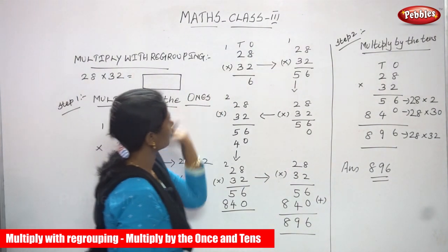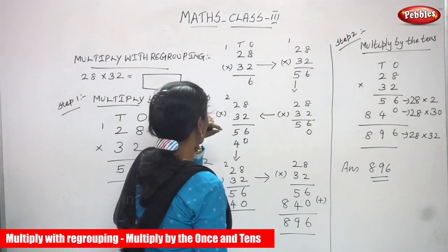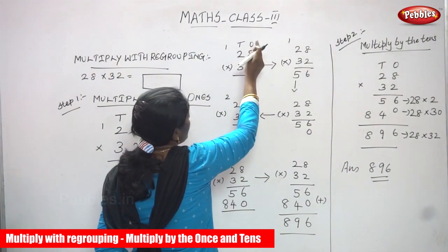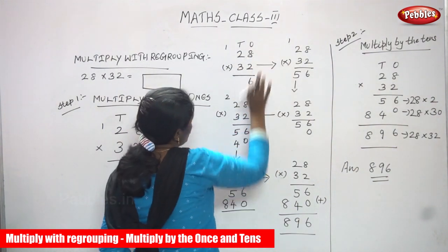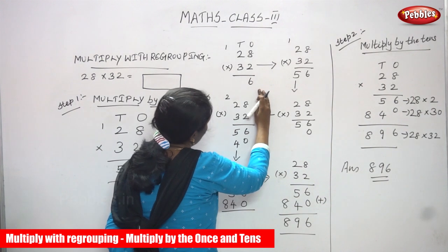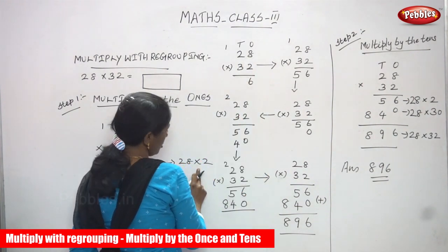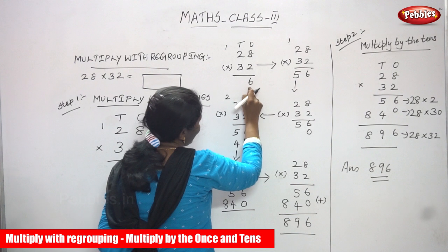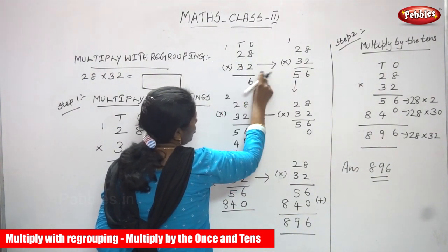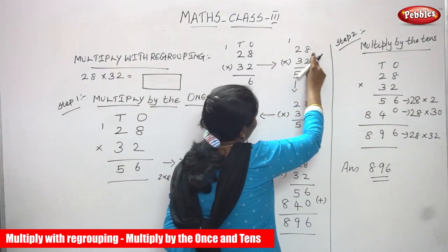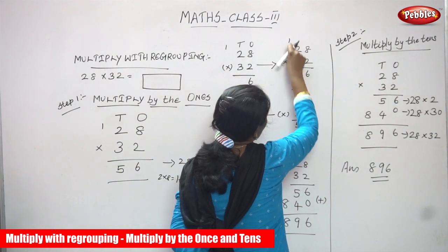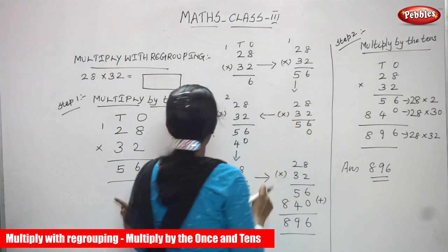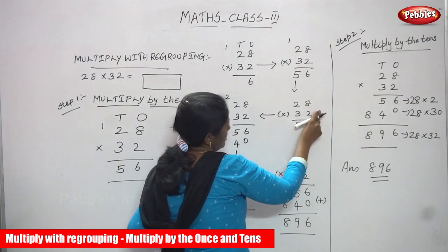So this is what I told you — with grouping, step by step. First, you must write the place value: ones and tens, then write 28 and 32. So 28 is going to multiply by 2 ones. 2 eights are 16; the 6 goes in the ones place and the carryover 1 goes to the tens place. Then 2 twos are 4, plus 1 is 5, so 56. Multiply by the ones is over.